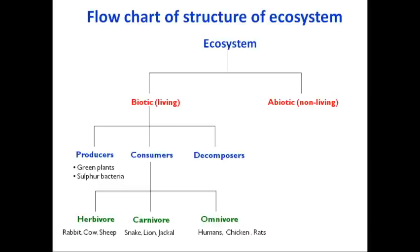The third category is decomposers. Decomposers are those organisms which feed on dead and decayed material — it could be dead leaves of a plant or any dead animal. Such organisms degrade the dead and decayed material, extract the nutrients and minerals from it, and use it as a food source. Examples of decomposers include microorganisms, earthworms, and some protozoans. So producers, consumers, and decomposers as a whole form the biotic component of an ecosystem.